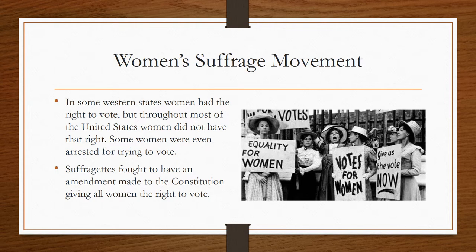Some different examples of the progressive movement: one segment of the Progressives wanted women to have the right to vote, which is known as the women's suffrage movement. In some Western states, women had the right to vote, but throughout most of the United States, women did not. Some women were even arrested for trying to vote. Suffragettes — suffrage means the right to vote — fought to have an amendment made to the Constitution giving all women the right to vote.